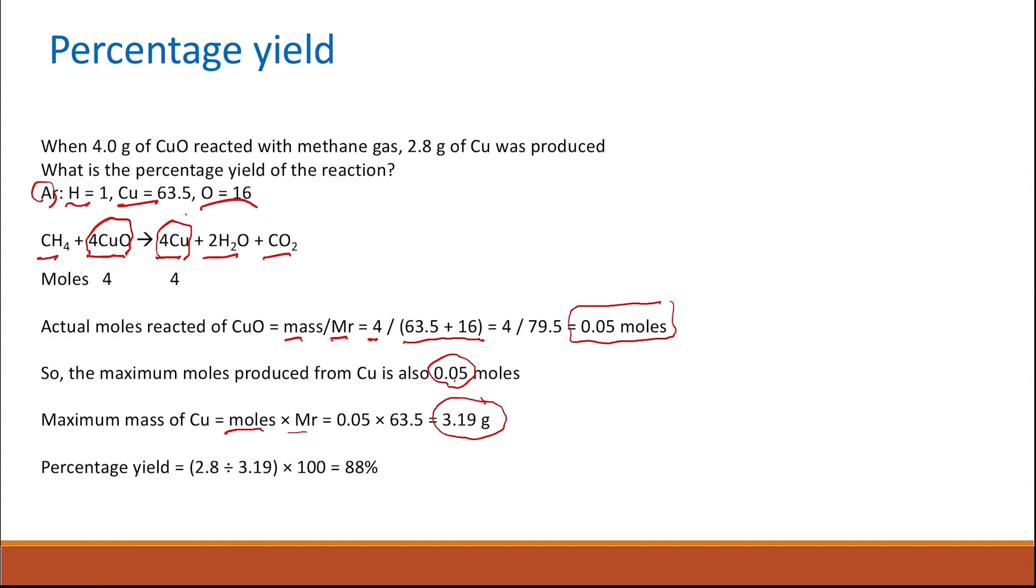Now we need to calculate the percentage yield. So the actual mass that was produced or the actual yield that was produced, which is 2.8 grams here, divided by the maximum mass that is expected, which is 3.19, multiplied by 100, equals 88%. So the percentage yield is 88%. So you only got 88% of what was expected.